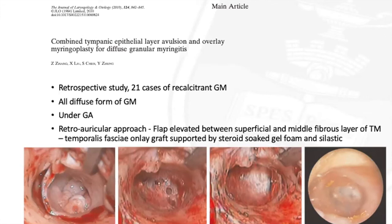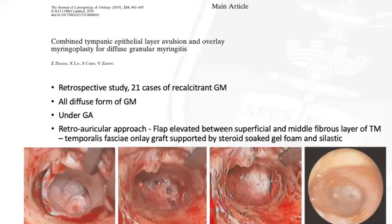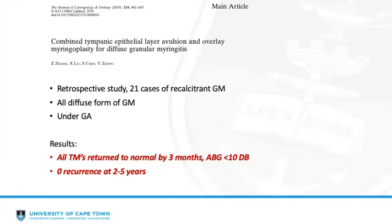All patients were managed surgically under general anesthetic by retroauricular approach. A flap was elevated between the fibrous layer and the superficial layer of the tympanic membrane; the superficial granulation tissue was peeled off the lamina propria en bloc. A piece of temporalis fascia, harvested slightly larger than the tympanic membrane, was placed over the residual fibrous layer in an overlay technique, supported laterally by a layer of silastic sheet and steroid-soaked gel foam. At three months post-operatively, all patients' tympanic membranes had returned to normal with air-bone gaps less than 10 dB on average, and there was no recurrence after two to five years of follow-up.